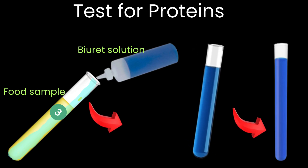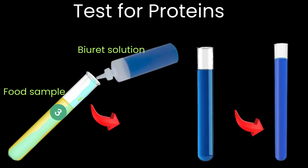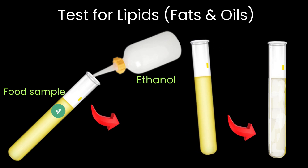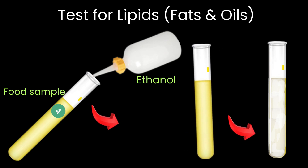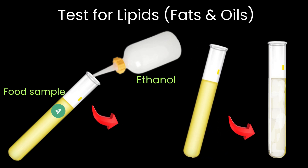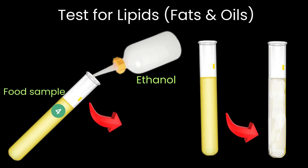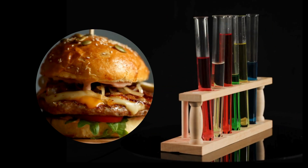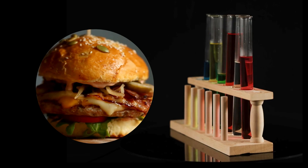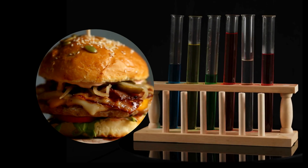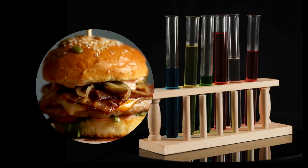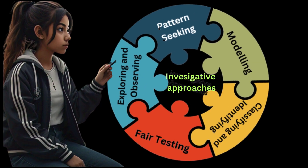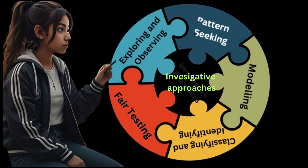In test tube three, you add Biuret solution — a mix of copper sulfate and sodium hydroxide. If proteins are present, the solution turns purple. In test tube four, you add ethanol and shake the tube vigorously. If lipids are present, a cloudy white emulsion forms. At the end of the experiment, you record the color changes in each test tube, helping you determine which macronutrients are present in the cheeseburger.